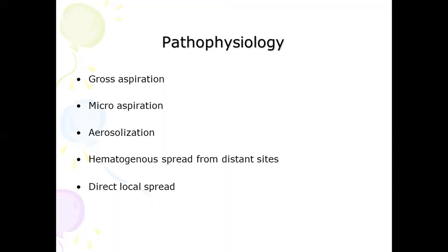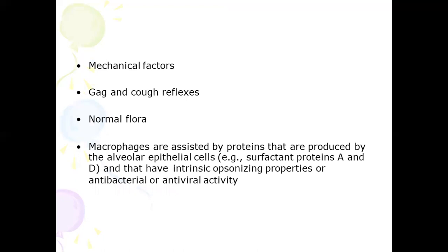There are various mechanisms that deal with microorganisms entering the respiratory system. There can be rare cases of hematogenous spread from distant sites, as in tricuspid endocarditis, and direct local spread from the pleura and mediastinal space. When we breathe, mechanical factors capture large inhaled particles — hairs and turbinates at the nose level — and the branching structure of the tracheobronchial tree facilitates catching microbes, aided by mucociliary action for clearance.